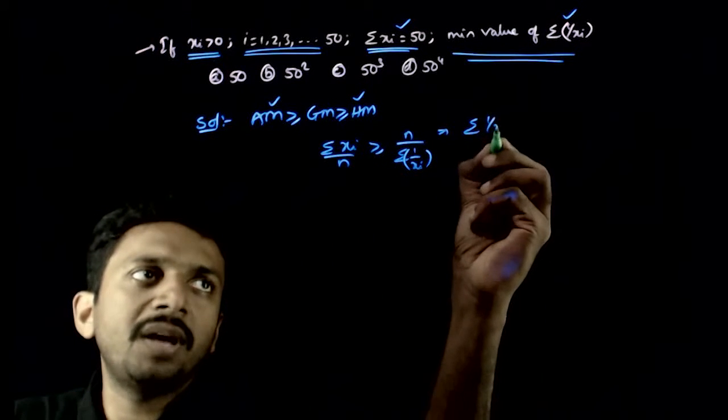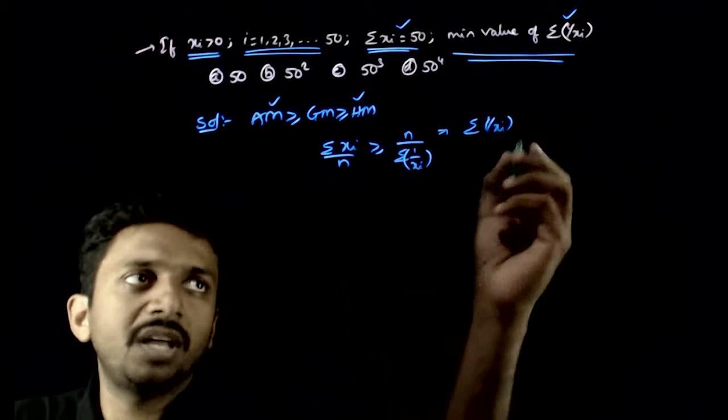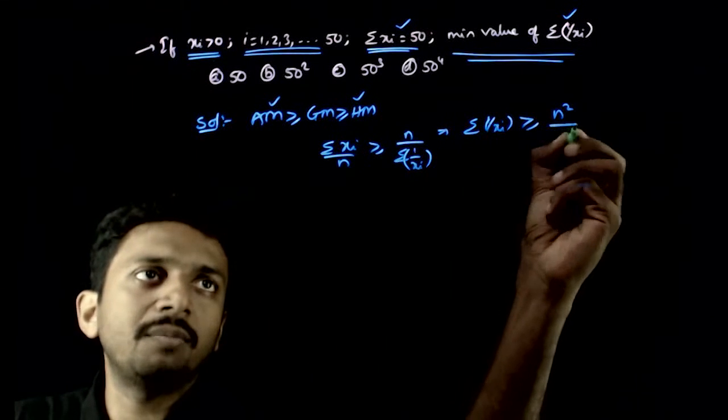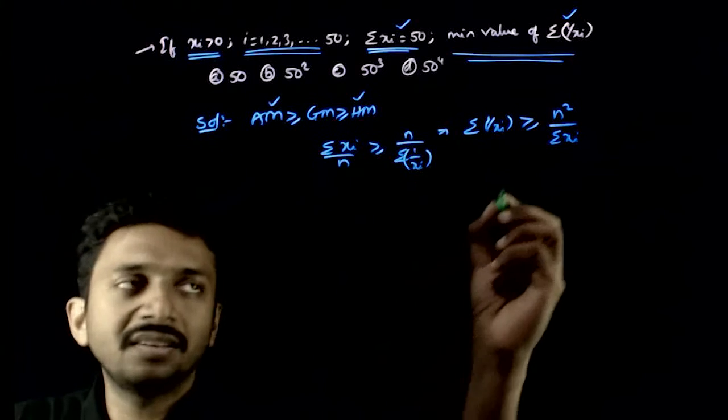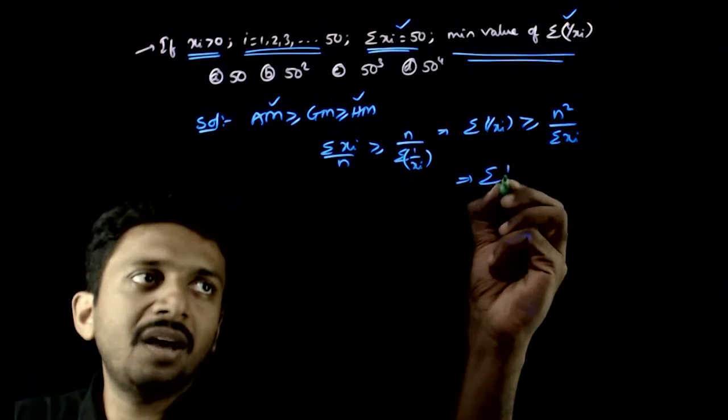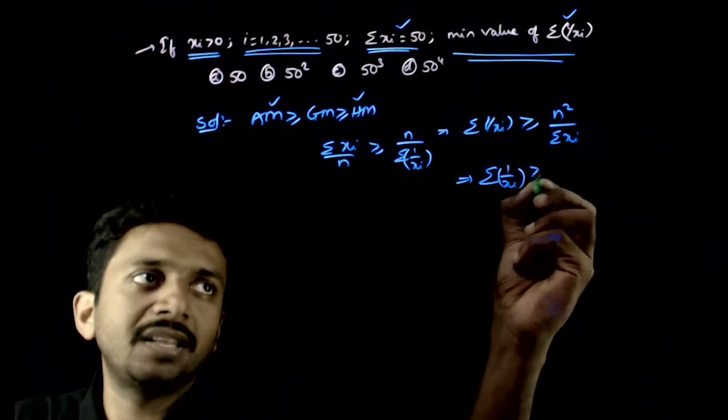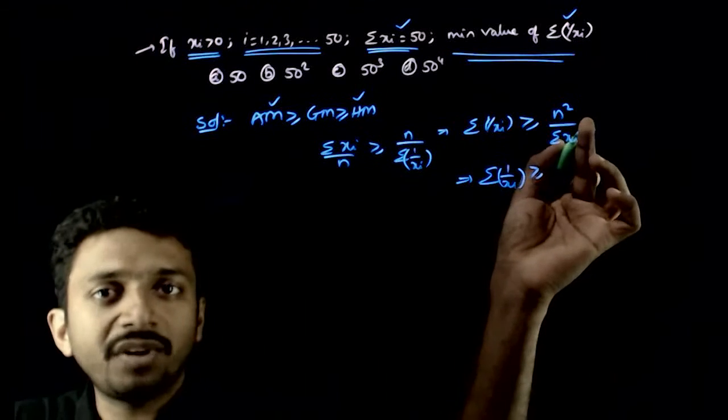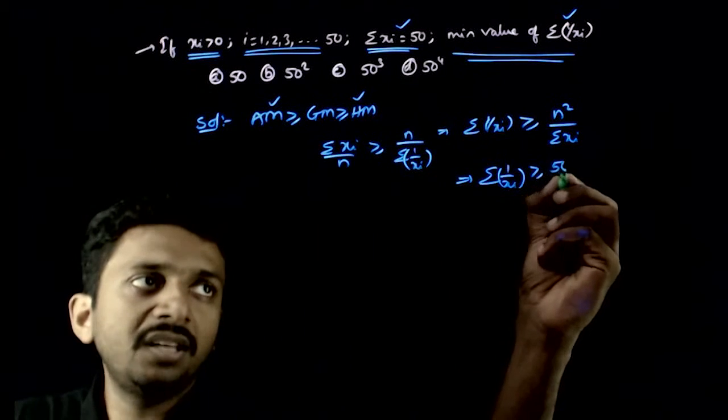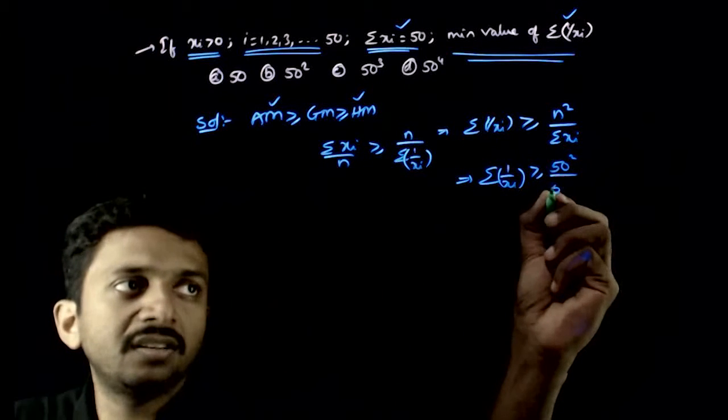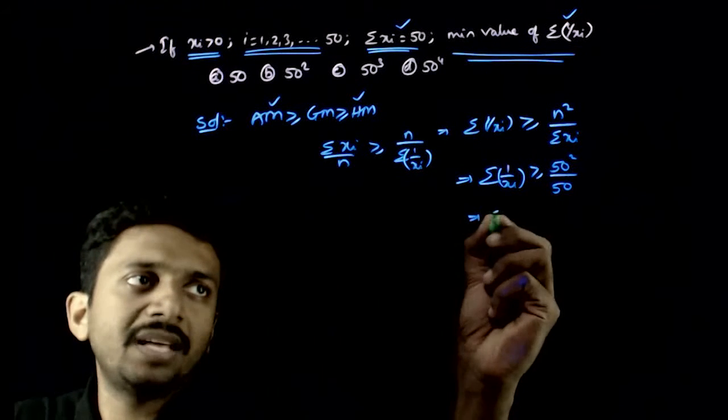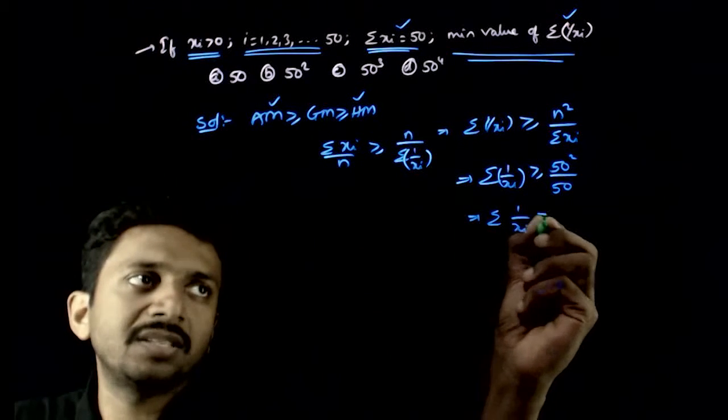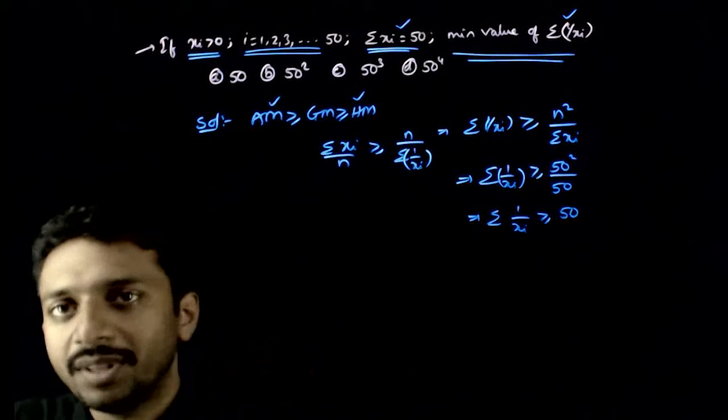So Sigma 1 by Xi, by cross multiplication, is greater than or equal to N square by Sigma Xi. This implies Sigma 1 by Xi is greater than or equal to N - the number of terms. In this question, the number of terms is 50 square by Sigma Xi which is given as 50. So this implies Sigma 1 by Xi is greater than or equal to 50 will be the answer.